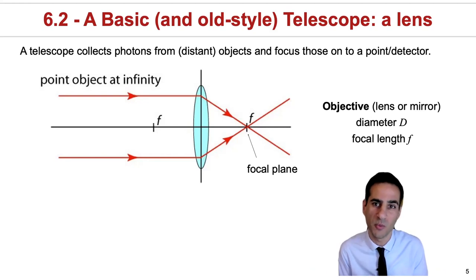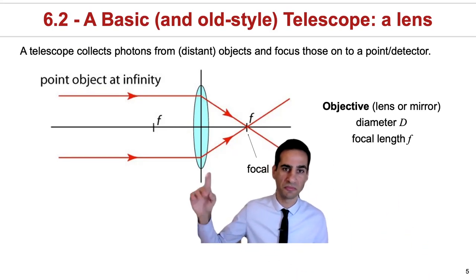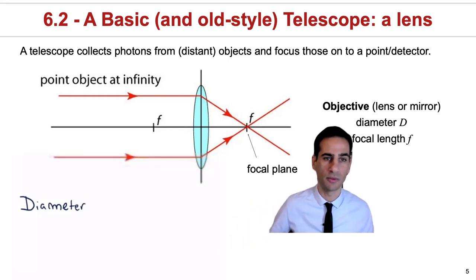An important thing to address is what exactly is a telescope. As we can see here, a telescope can be characterized essentially by a lens and a focal plane.